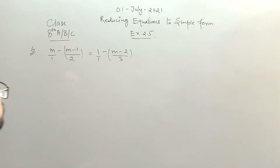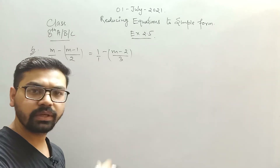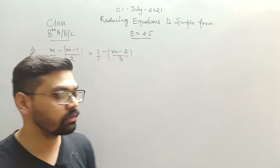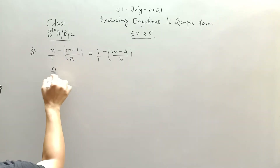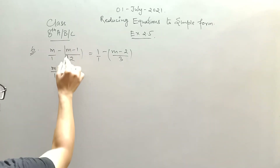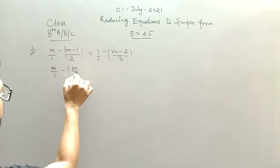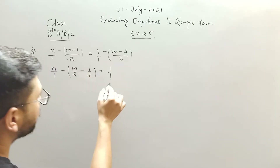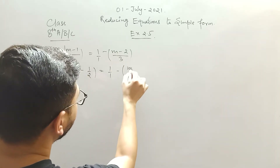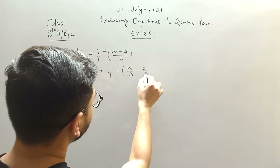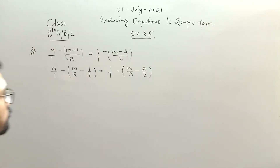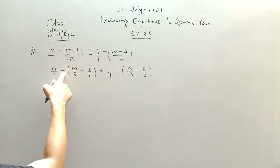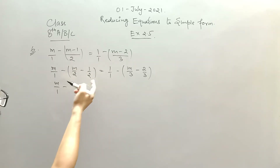Again, first you need to solve for variables — separate out variables on one side and constant terms on the other. First I separate out these values: m by 2 minus 1 by 2 equals 1 minus m by 3 minus 2 by 3. Now in the next step, I just multiply this negative sign within the bracket.